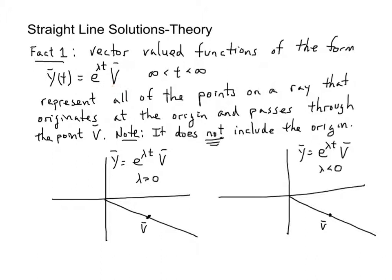do, in fact, lie on a ray that passes through the point V and it originates at the origin, does not include the origin. It does not include the origin. So you can think of this as a parameterization of this ray.